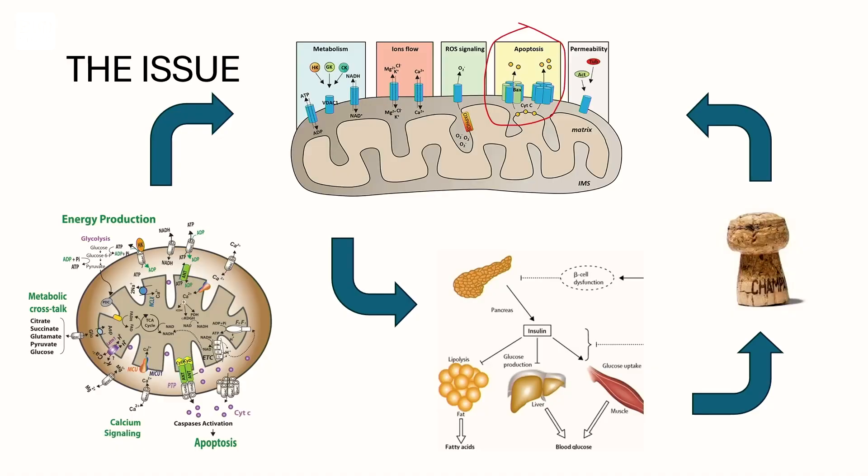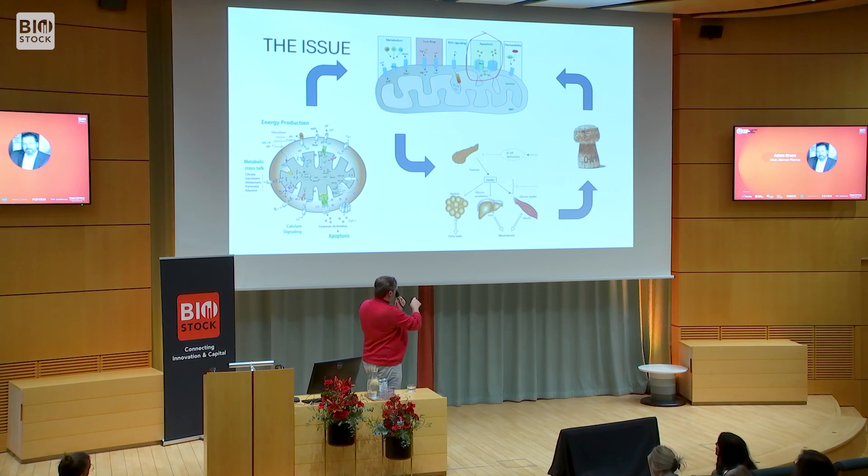We started looking at this in diabetes. We used cells from type 2 diabetics that couldn't produce insulin properly. We stimulate with glucose — nothing happens. We add our drug, say abracadabra, then stimulate with glucose, and they start producing insulin. It is a little bit of magic. Beta cell dysfunction actually affects a lot of things.